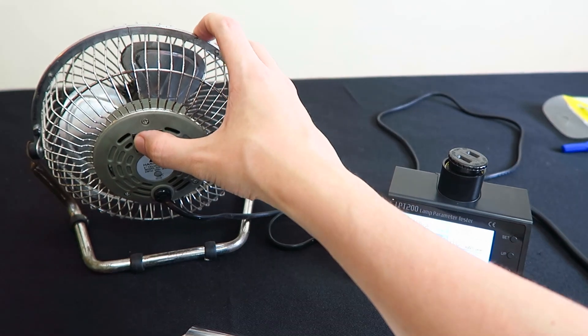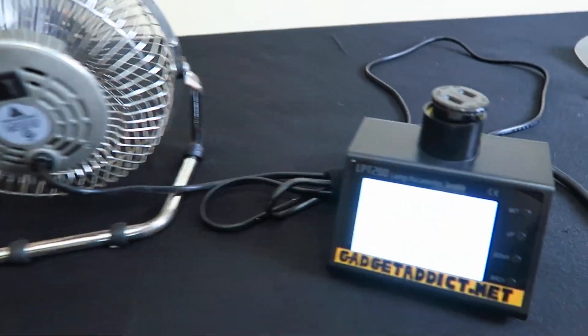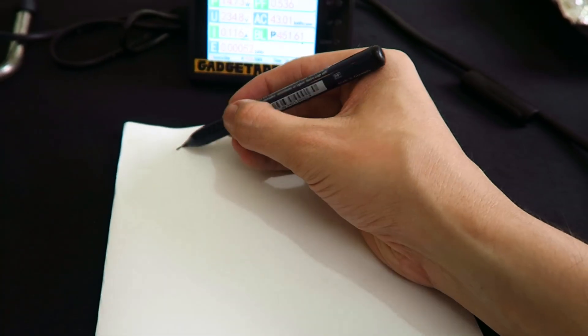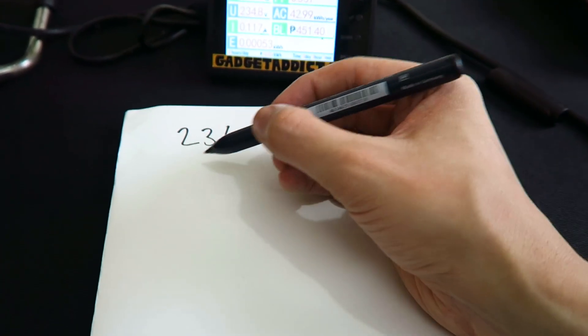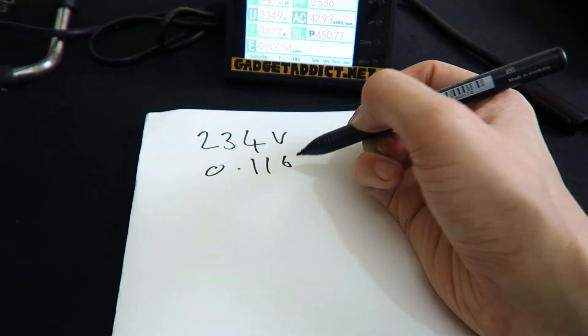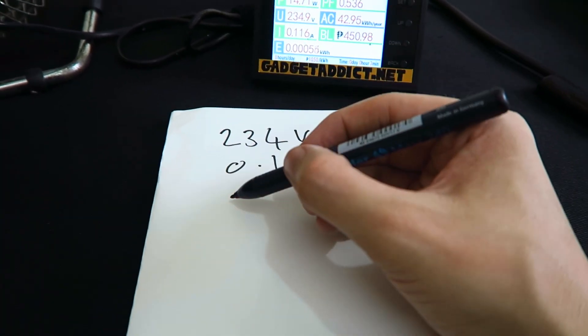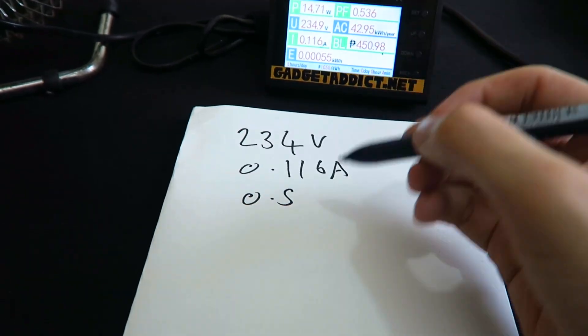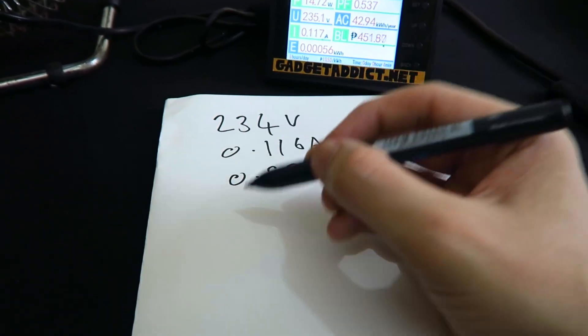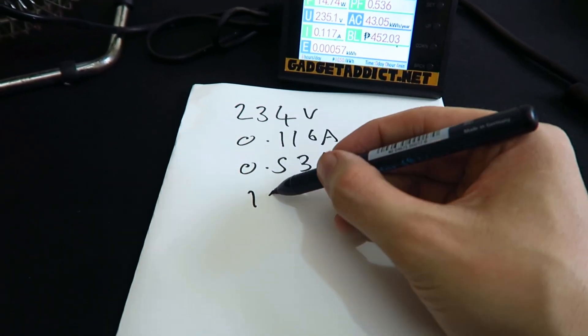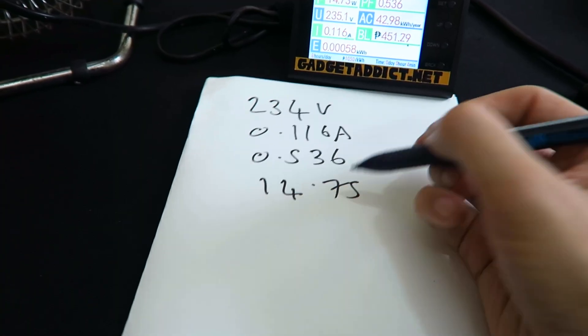Let's put the fan on its top speed and then look at the power meter. Let me write those numbers down. So we've got 234 volts, 0.116 amps, power factor of 0.536, and our wattage around 14.75 watts.